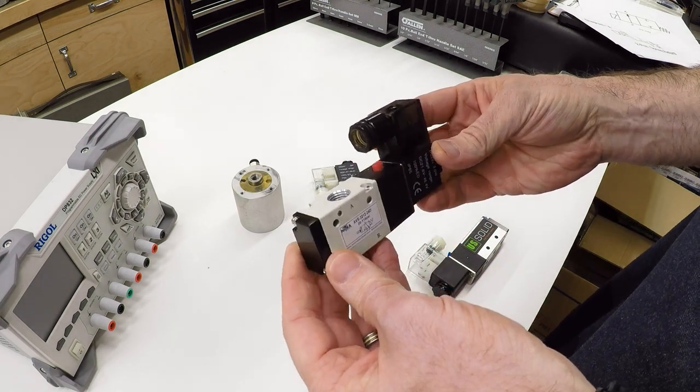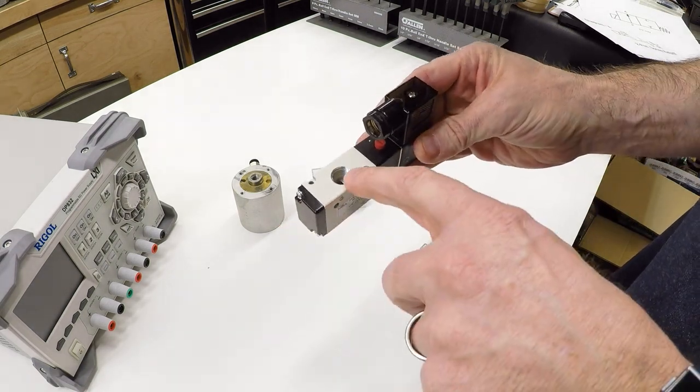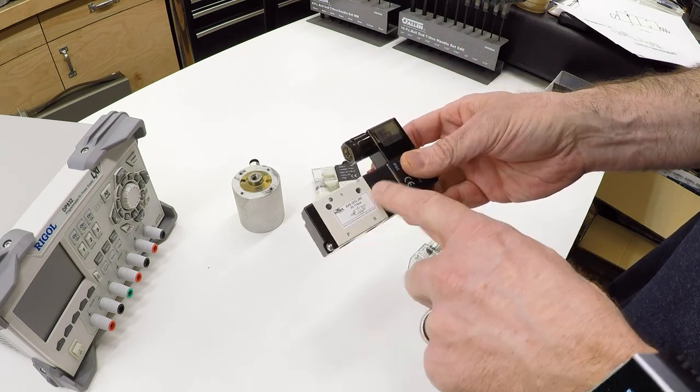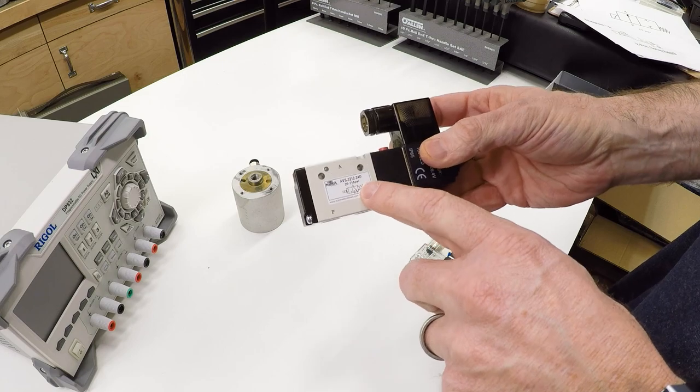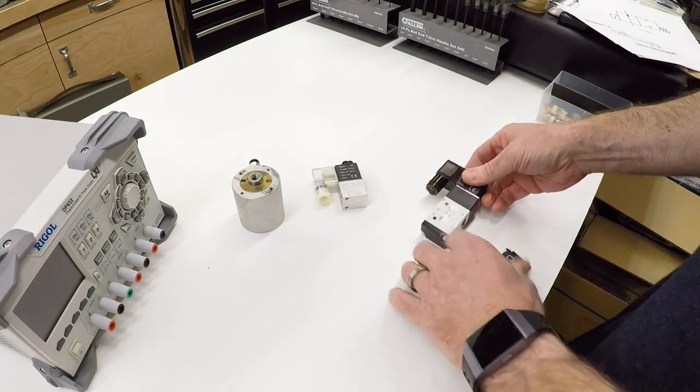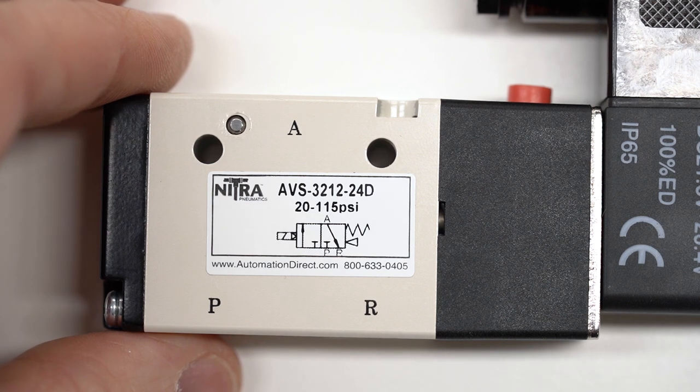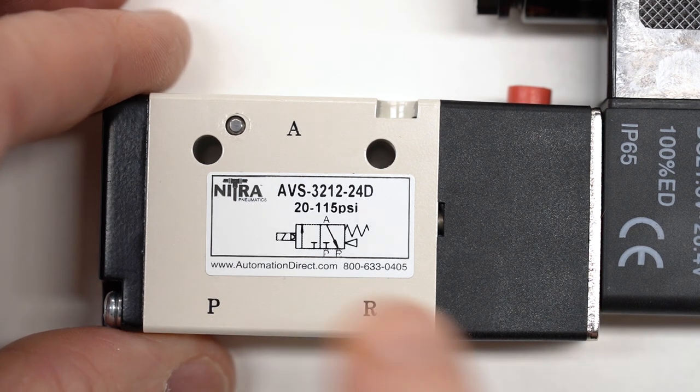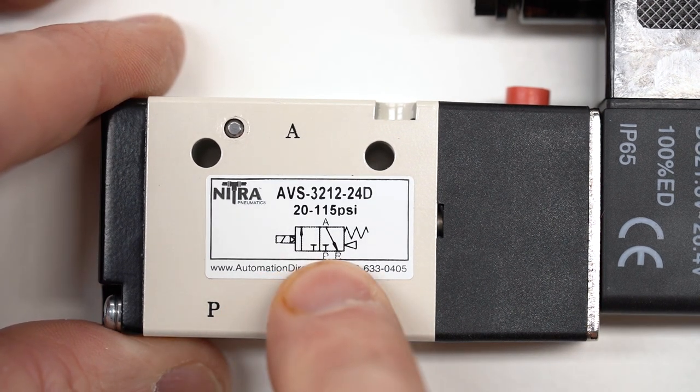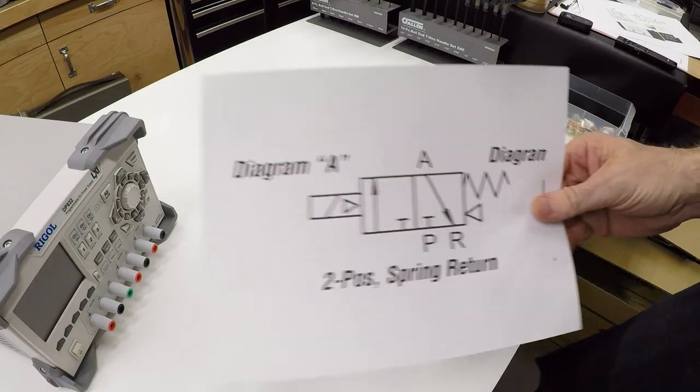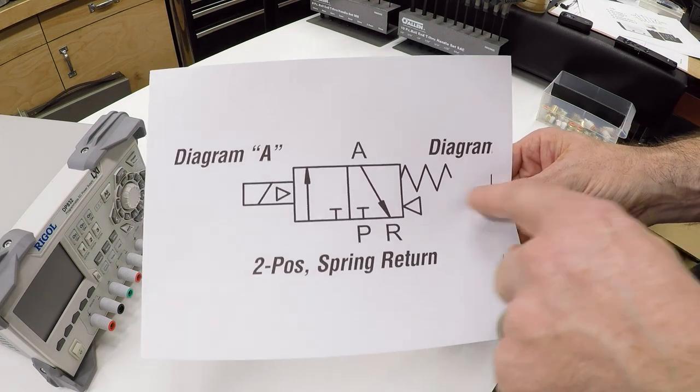This is referred to as a 3-2 valve, because it has three ports, one, two, three, and it runs in two positions. There's a little symbol on the side here that shows the operation of the valve. I have a bigger version of it, and this is the 3-2 valve.